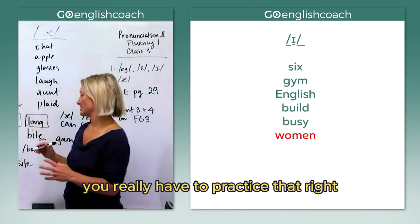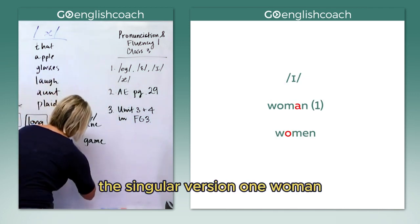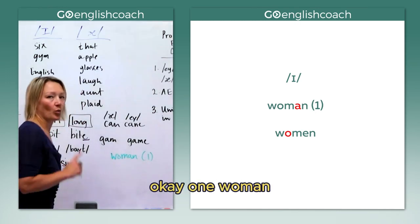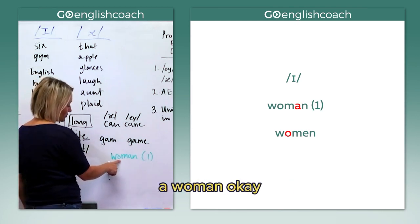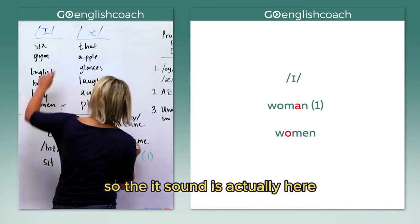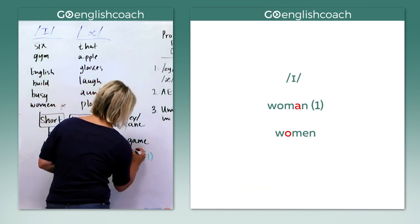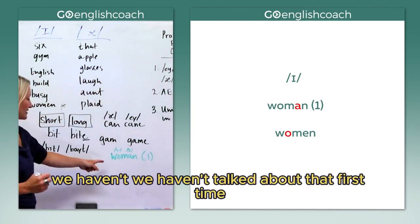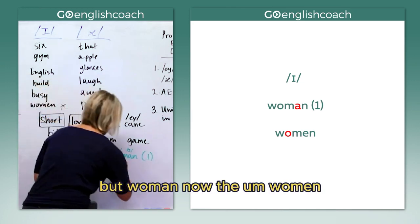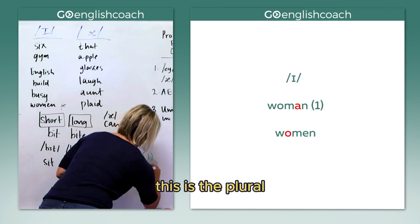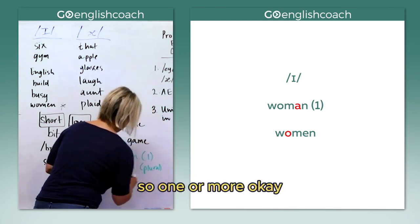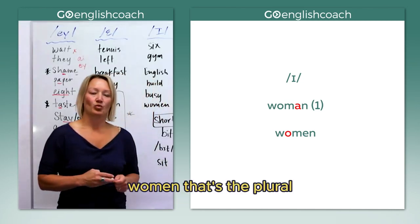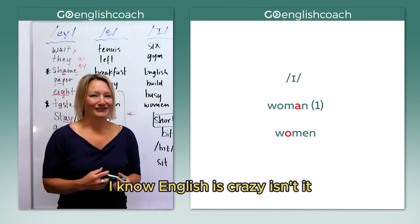So if we've got the word 'woman' — the singular version, one woman — it's spelled with an eh here: wuh-man. The short I sound is actually in the second syllable. And for 'women' — the plural — you've got eh here and eh here: wi-men. I know — English is crazy, isn't it?